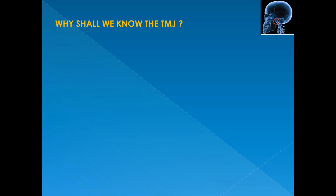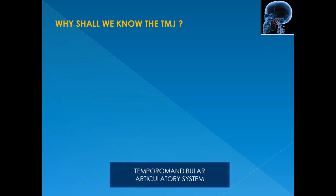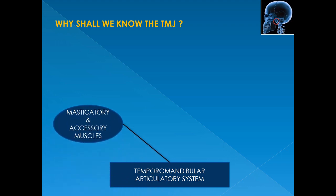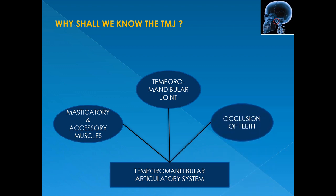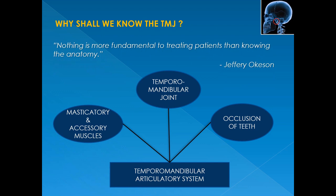Next we discuss the features and functional anatomy of the temporomandibular joint. Patients frequently consult a dentist because of pain and dysfunction in the temporomandibular region. TMDs include myofacial pain, internal derangement, inflammation, dislocation, and ankylosis. To treat TMDs, we must know the anatomy and physiology of the whole articulatory system, which consists of the masticatory and accessory muscles, the temporomandibular joint, and the occlusion of teeth. As per Geoffrey O'Keson, nothing is more fundamental to treating patients than knowing the anatomy.